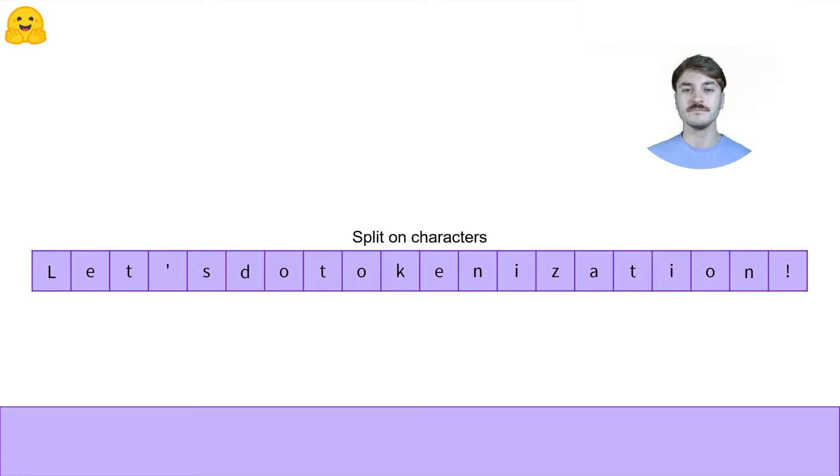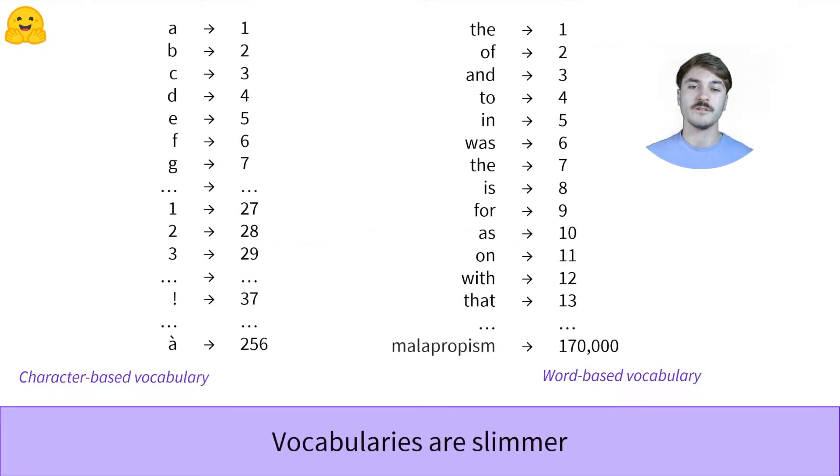There are generally a lot of different words in languages while the number of characters stays low. To begin, let's take a look at the English language. It has an estimated 170,000 different words, so we would need a very large vocabulary to encompass all words.